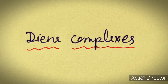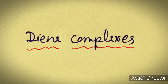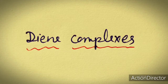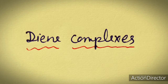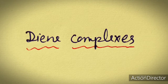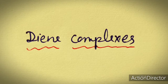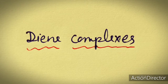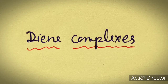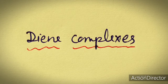Dear students, welcome to the lecture on diene complexes. In diene complexes we will study two ligand complexes: butadiene and cyclobutadiene complexes. As the name indicates, diene means there are two double bonds in the ligand that is attached to the metal center to form the complex.